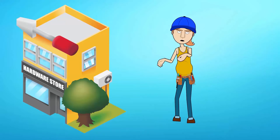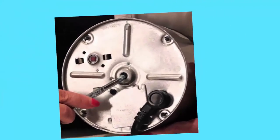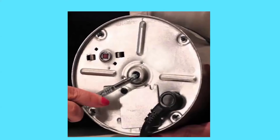On the bottom of the disposal, in the center, is a hole that will accept that wrench. Insert the wrench into the hole and turn it until you feel the blades free up.